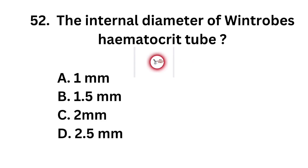Question number 52. The internal diameter of Wintrobe's hematocrit tube. Option A: 1 mm. Option B: 1.5 mm. Option C: 2 mm. Option D: 2.5 mm.